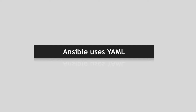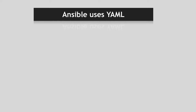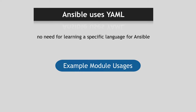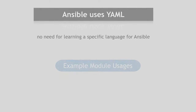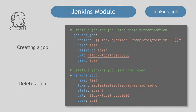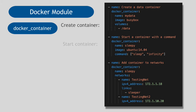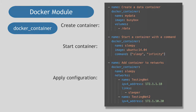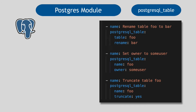Another important distinction and big reason Ansible became so popular is that it uses simple YAML language, which means it doesn't require learning any special language because it's super intuitive. For example, there is a Jenkins module that can create or delete a job using different arguments, a Docker module that can create, restart, or delete containers and apply configurations, and a Postgres module to do database tasks like creating a table or setting user privileges.